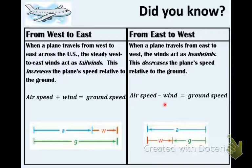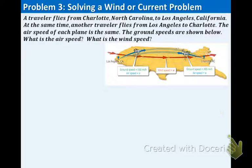Now let's use this knowledge to work on example three. A traveler flies from Charlotte, North Carolina to Los Angeles, California. At the same time, another traveler flies from Los Angeles to Charlotte. The air speed of each plane is the same. The ground speeds are shown below in the picture. What is the air speed and what is the wind speed?